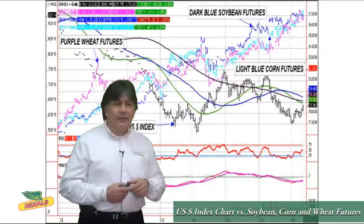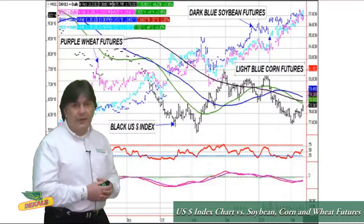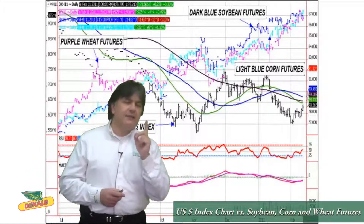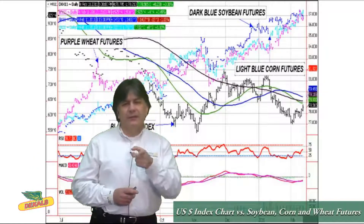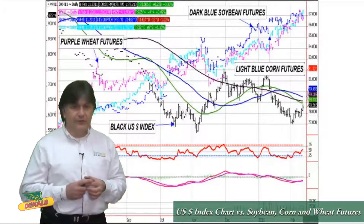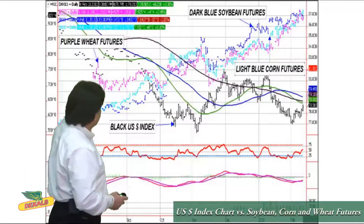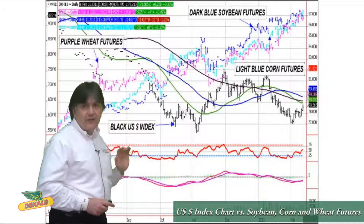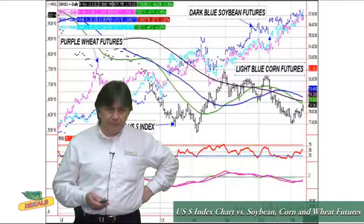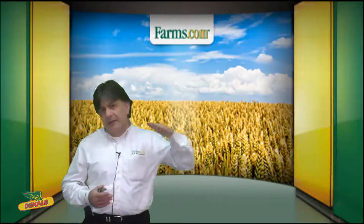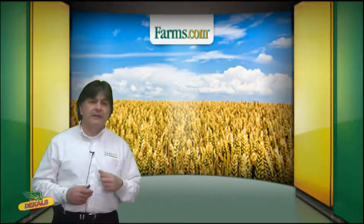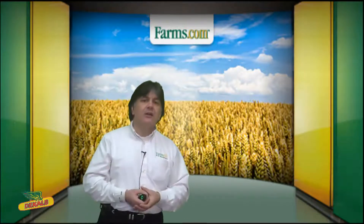This is the relationship that the US dollar has to grain commodities. In black is the US dollar, purple is wheat futures, dark blue is soybeans, and light blue is corn futures. You can see there's an inverse relationship — as the US dollar comes down, those grain commodities move higher, and vice versa. This happens simply because as the US dollar moves down, foreigners' purchasing power actually increases, making that US commodity a lot cheaper.